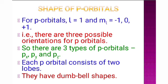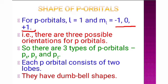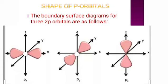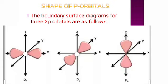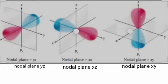Now, the shape of p-orbital. P-orbital has a dumbbell shape. For p-orbital, l = 1, so the magnetic quantum number ml has values -1, 0, and +1. That means p-orbital has three possible orientations. For px-orbital, the lobes are along the x-axis. For py-orbital, the lobes are along the y-axis. For pz-orbital, the lobes are along the z-axis. In the case of px-orbital, the y-z plane is the nodal plane.